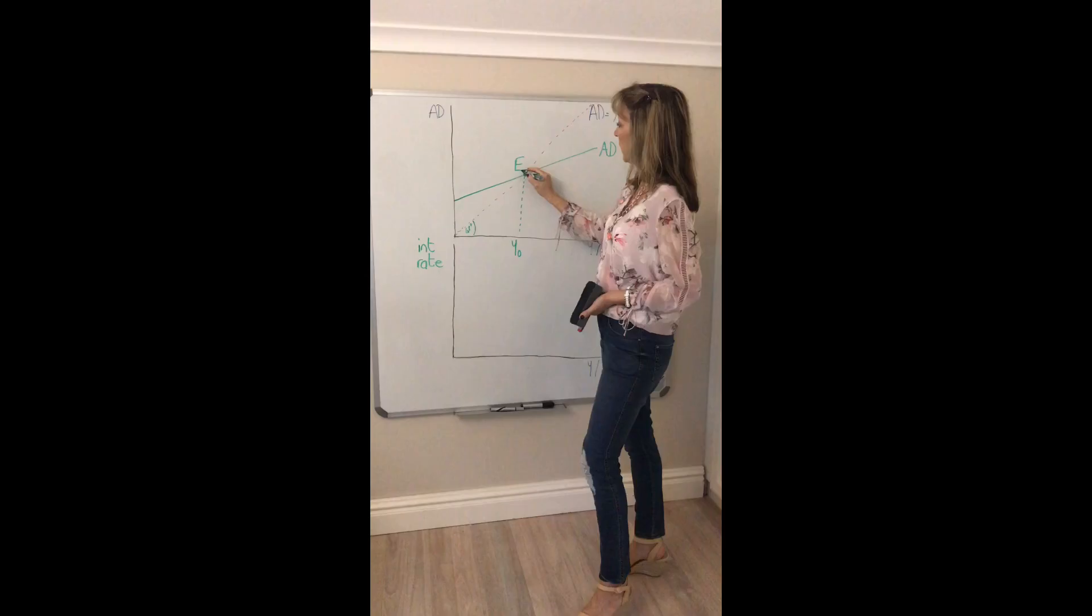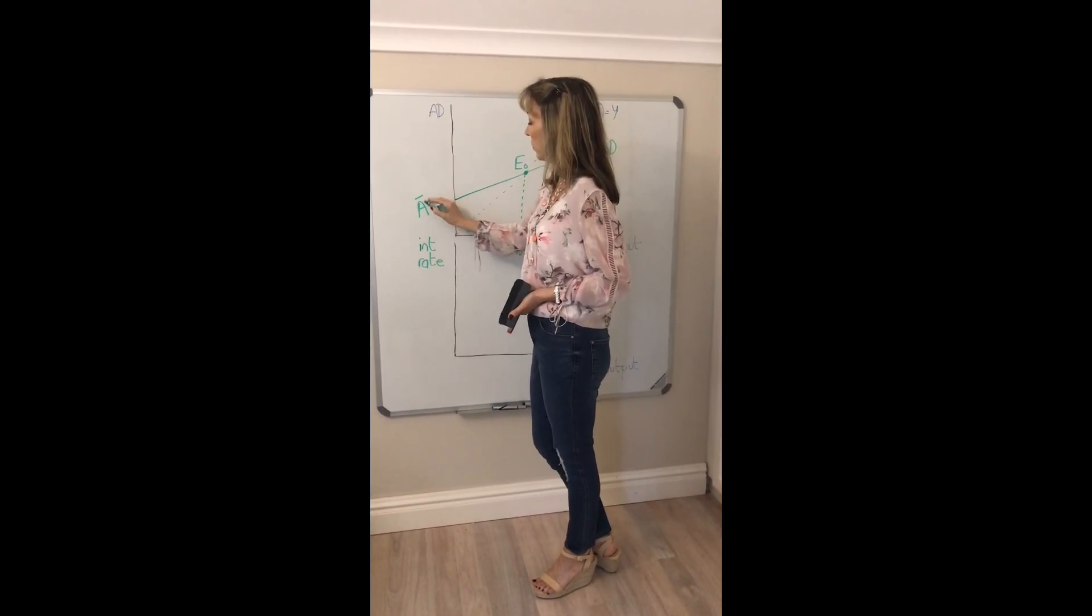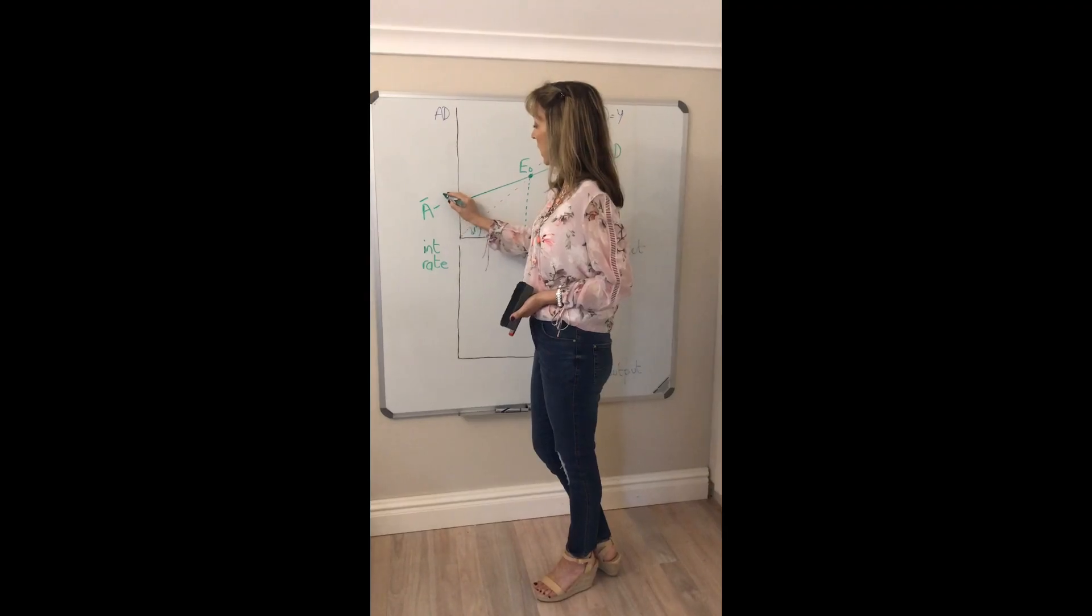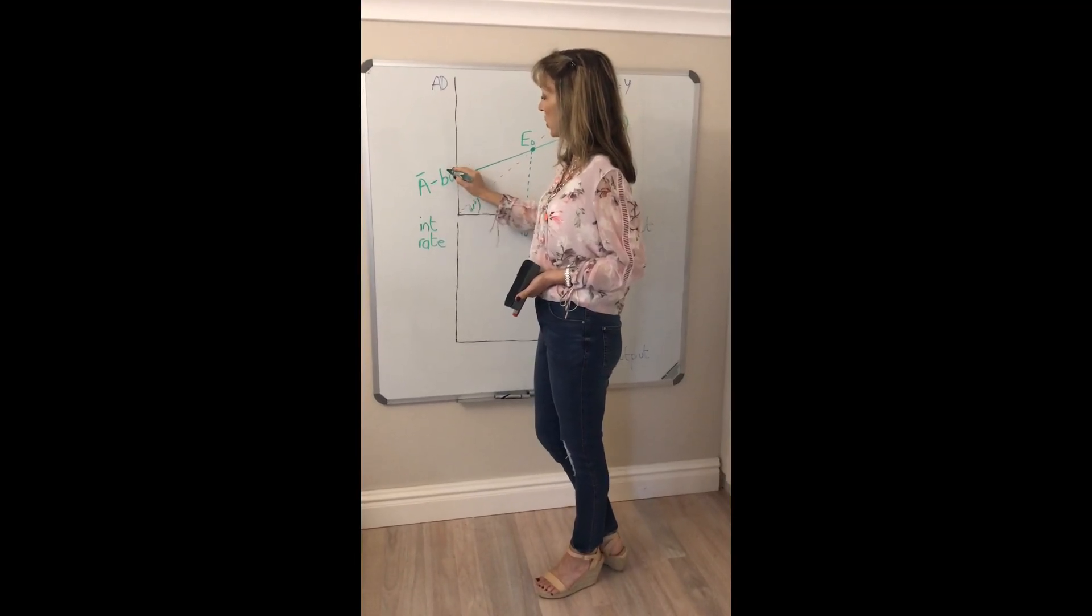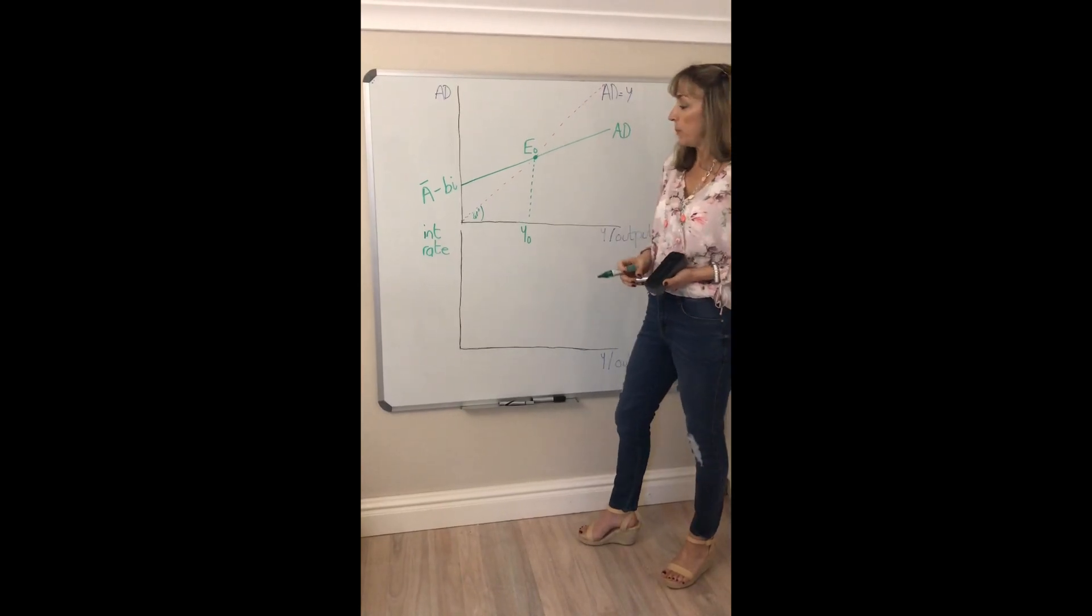So we'll call this our initial equilibrium and our intercept to begin with is A bar, all autonomous spending. The only difference now is that when we took the full version of investment we have to subtract BI from that.